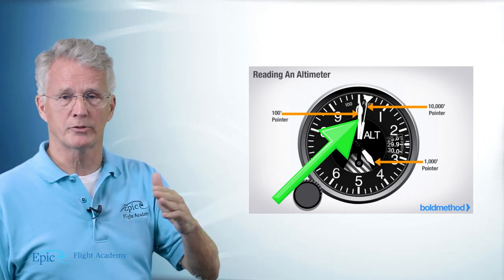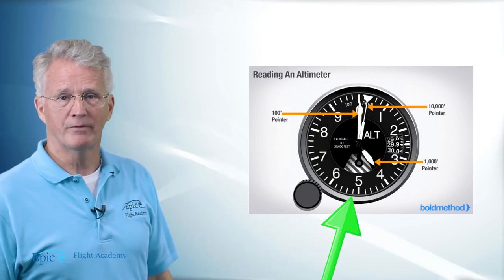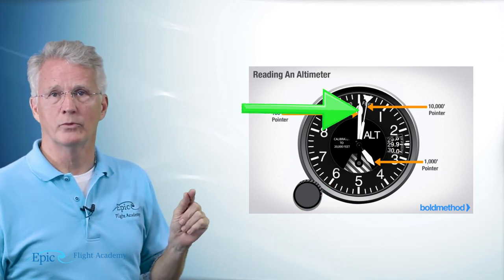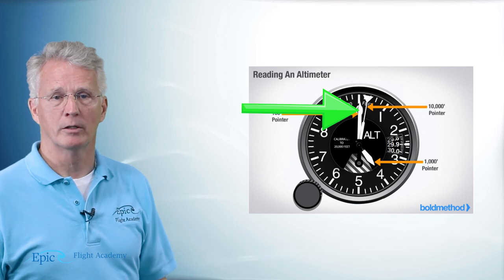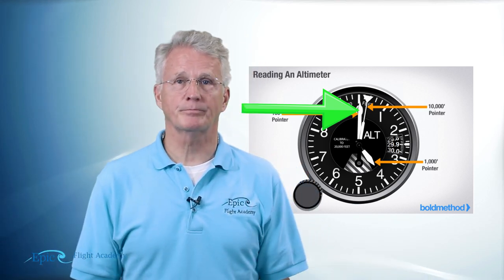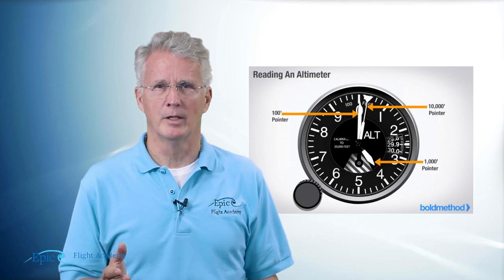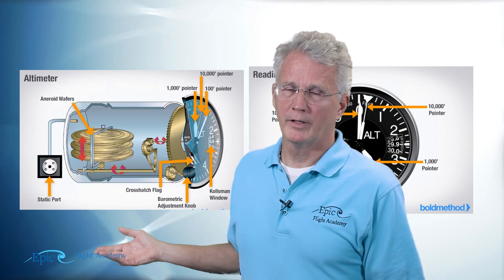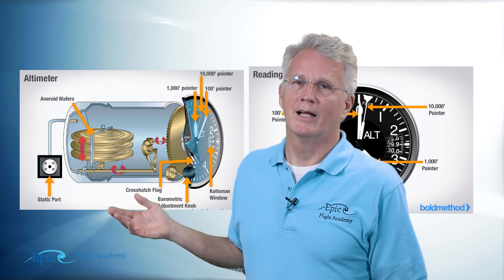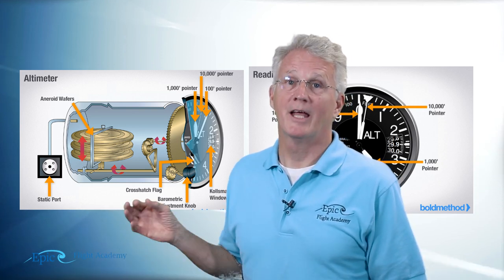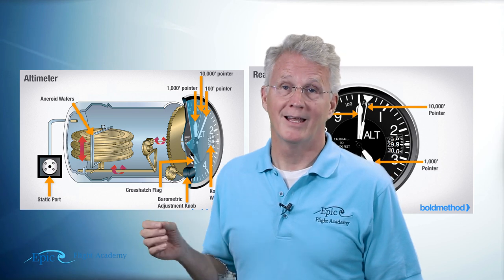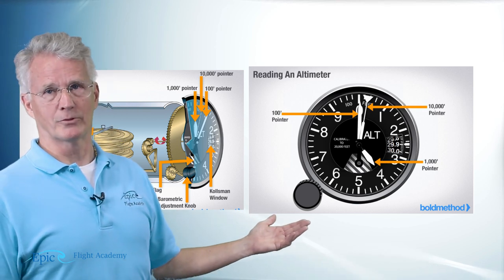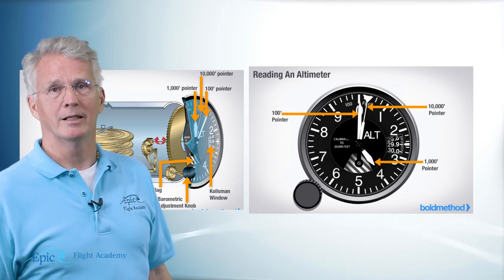Notice between zero and one there are five tick marks. So if I'm using the 100-foot pointer, each tick mark is 20 feet. Key point to remember: the altimeter is a barometer that measures pressure, and moving over to the face of the altimeter, it indicates altitude. Hence the name indicated altitude.